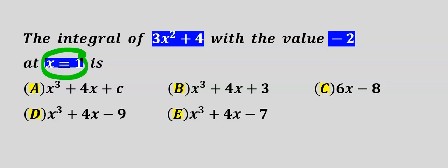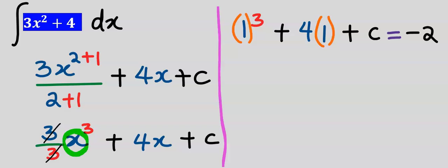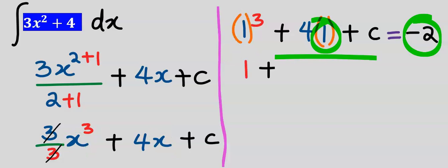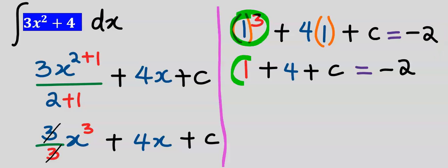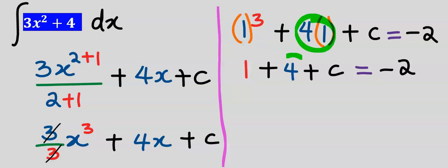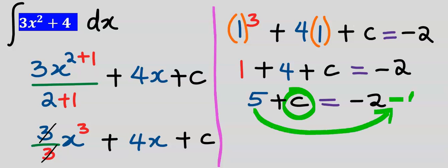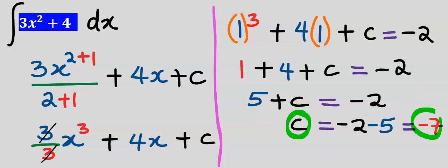Next, at x equal to 1 the integral of this function will be equal to minus 2. Hence wherever we see x we input 1, and at this condition the entire integral will equal minus 2, which is the given condition. Now 1 to the power of 3 is equal to 1, and 4 multiplied by 1 is 4. Next we make C the subject: 5 moves to the other side to become minus 5, and our C is equal to minus 7, which is minus 2 minus 5.